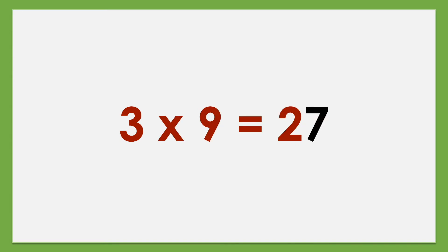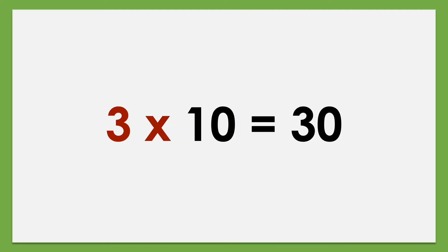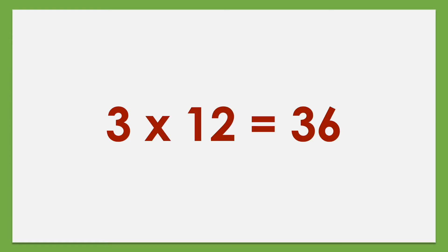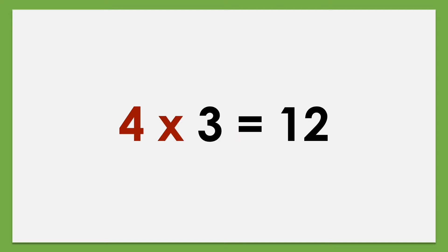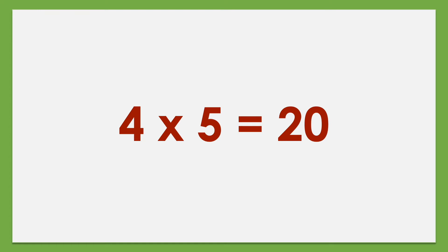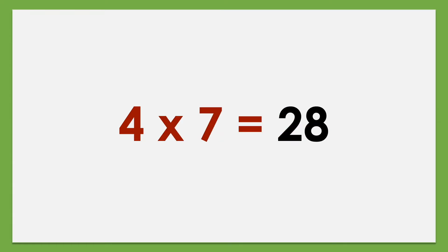3 times 9 equals 27, 3 times 10 equals 30, 3 times 11 equals 33, 3 times 12 equals 36. Set of 4: 4 times 1 equals 4, 4 times 2 equals 8, 4 times 3 equals 12, 4 times 4 equals 16, 4 times 5 equals 20, 4 times 6 equals 24, 4 times 7 equals 28.